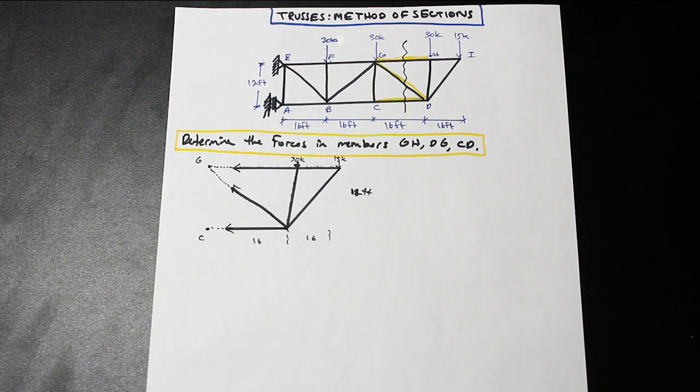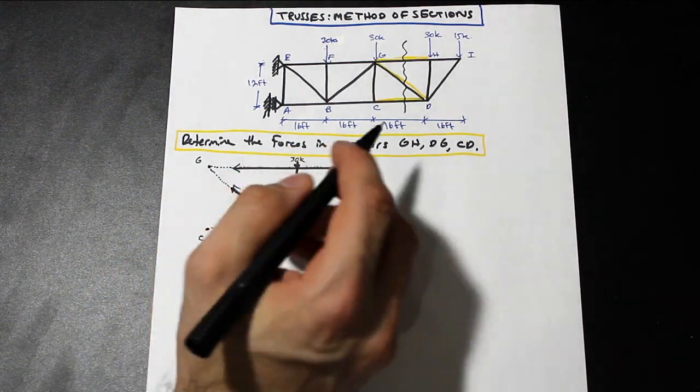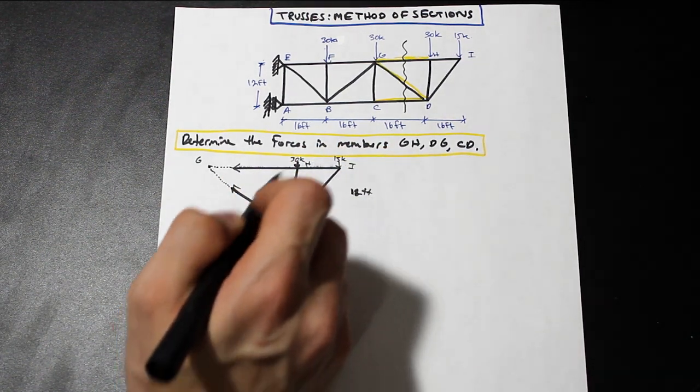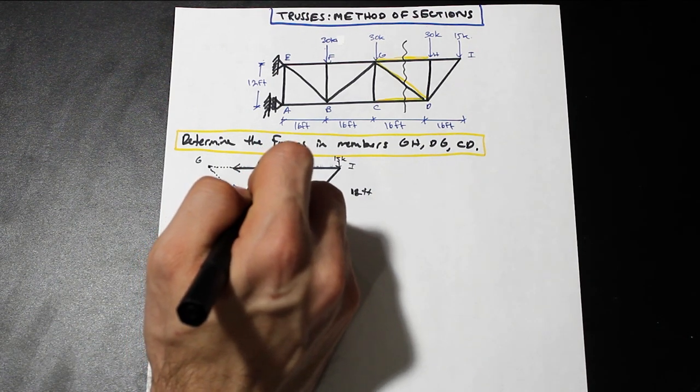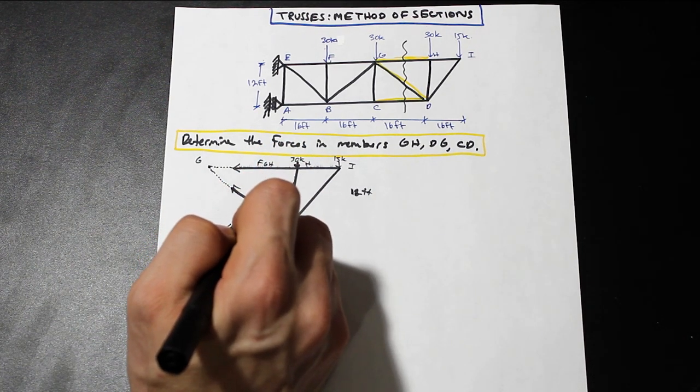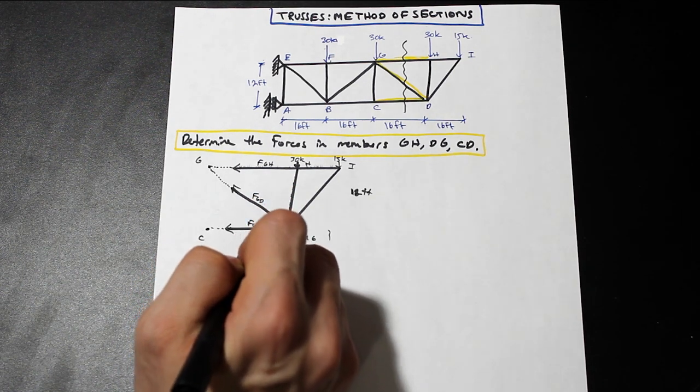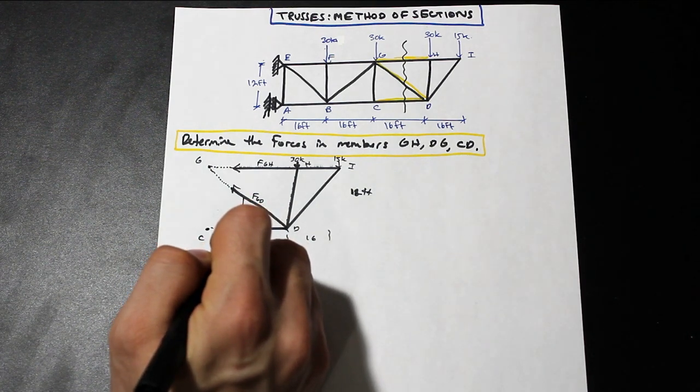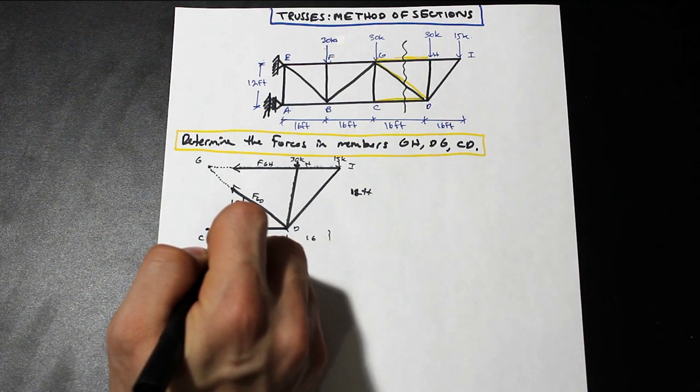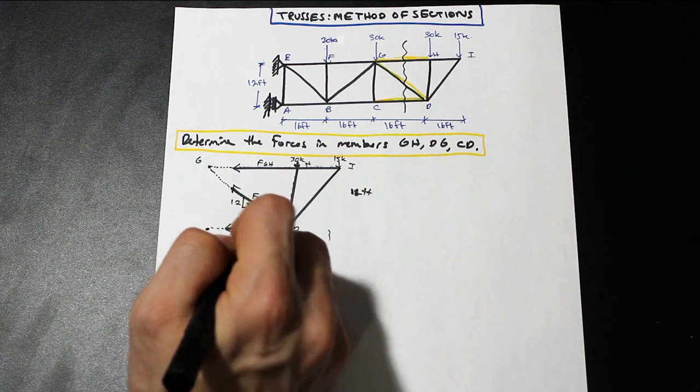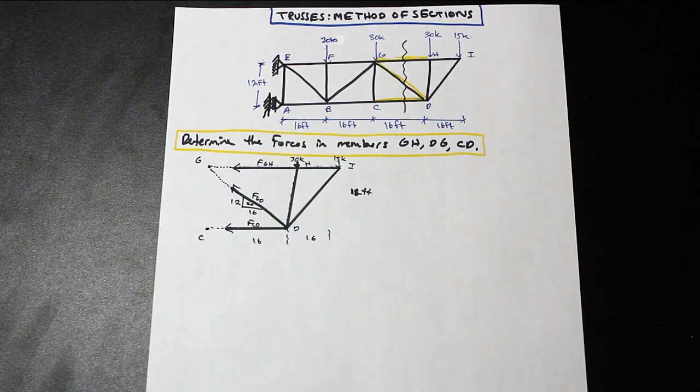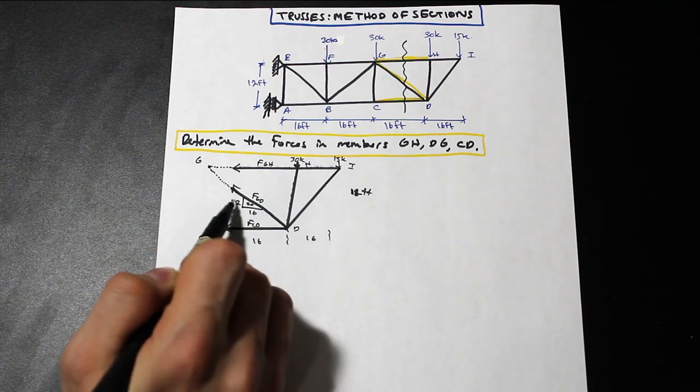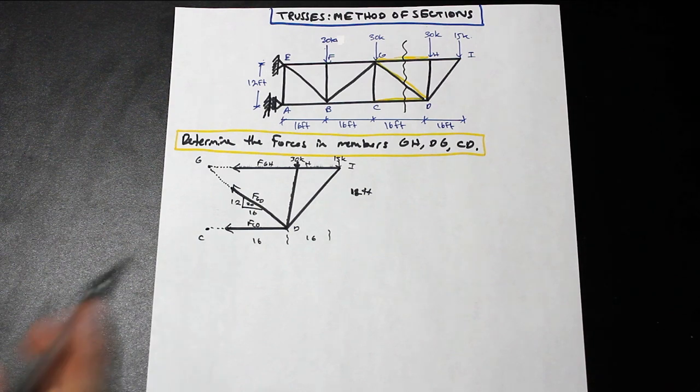So our point G is still over here. It's just the members have been cut before it, but it doesn't mean we can't still take the moment about G, which is going to help us. And this is point C, and I'd like to actually label these. So we have H, I, D, and this is FGH, FGD, and FCD. So very important to stay organized when you're doing this question. Also, we may need to get the angle of this at some time. So this is 12, this is 16, and this is 20 for the hypotenuse there. So I always suggest if you have an angular member here, just work out the triangle here on it so that you can use it to get the forces if you need them.